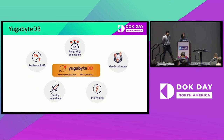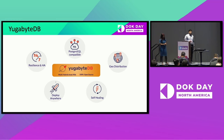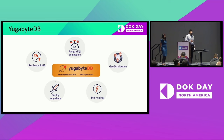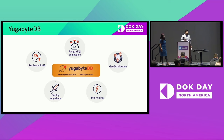YugabyteDB is a transactional SQL distributed database designed for resilience, scale, and global data distribution. It is fully Postgres compatible and has support for advanced Postgres features such as triggers, stored procedures, and partial indexes. YugabyteDB can be deployed on VMs and Kubernetes in the cloud or on-premise. YugabyteDB can automatically heal from certain classes of failures and does its own native replication. It is a proven database designed for scale and geodistribution.